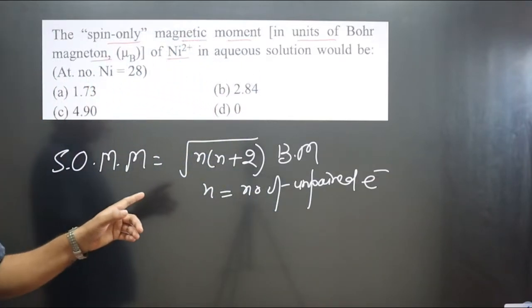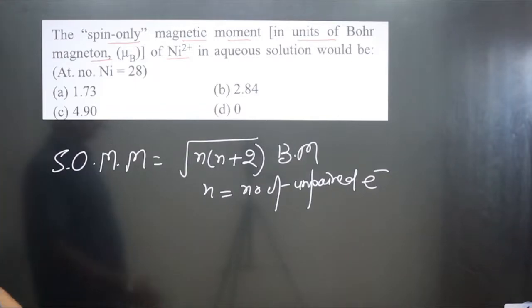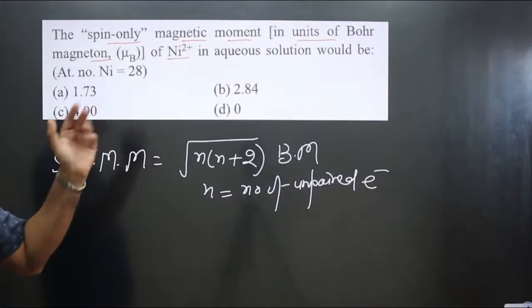So spin-only magnetic moment depends on the number of unpaired electrons. You can see the formula. So number of unpaired electrons we can calculate in nickel 2 plus.